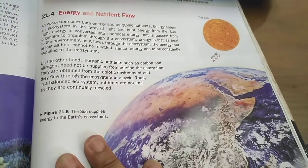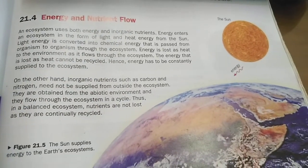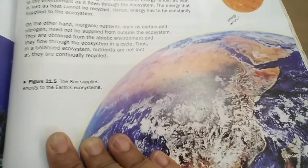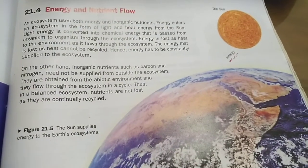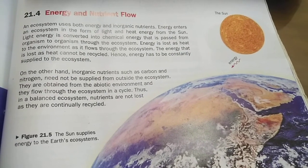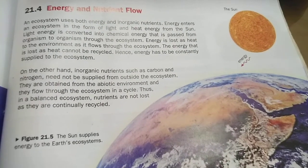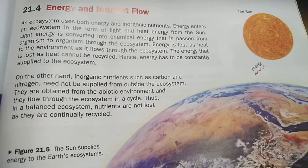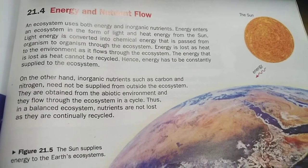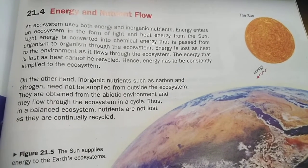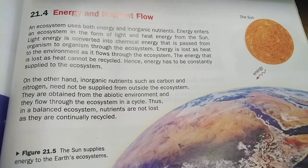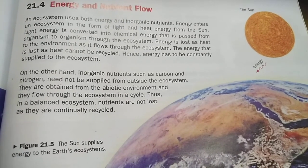Have a look here — this is the sun. The sun is the basic source of all the energy going toward the earth. An ecosystem uses both energy and inorganic nutrients. Energy enters an ecosystem in the form of light and heat from the sun. Light energy is converted into chemical energy that is passed from organism to organism through the ecosystem.